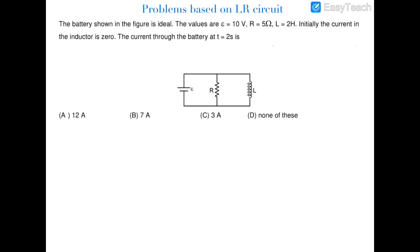In this question a cell, a resistance R, and an inductor are all connected in parallel to each other, and initially the current in the inductor was 0. We have to calculate the current through the battery at t = 2 seconds. You should note carefully that this is not a transient LR circuit — this is a simple circuit where R and L are in parallel with the battery.